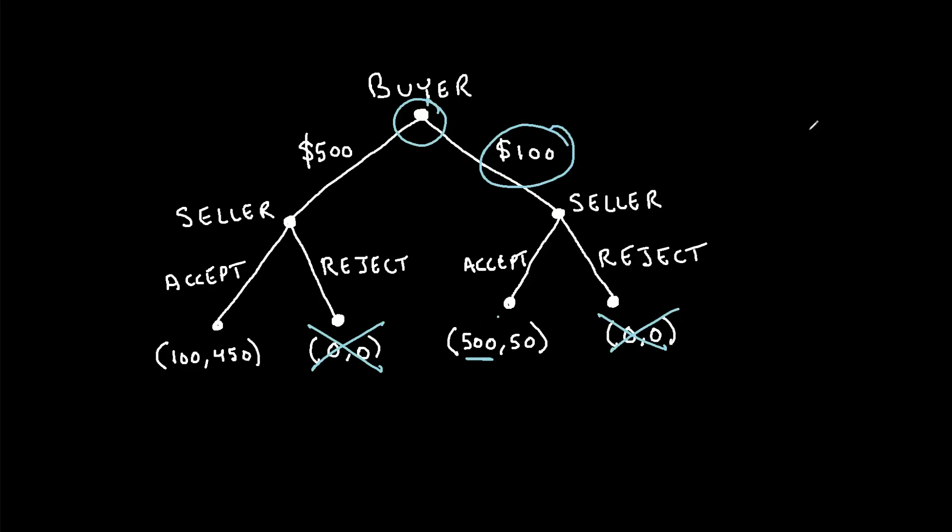Well, $500 is greater than $100, so they would prefer this outcome. So we can also say that this outcome will also be eliminated, because the buyer will never make the decision to land here as the outcome.